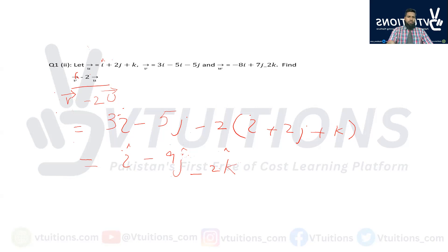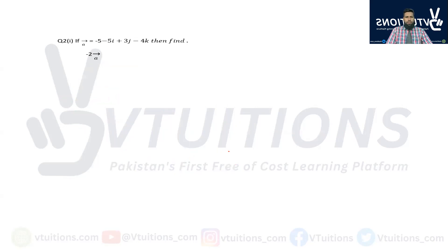Next question is: if a vector is equal to -5 iota + 3j - 4k, then find -2a vector. All right, dear students.